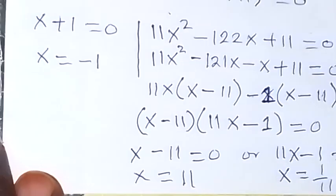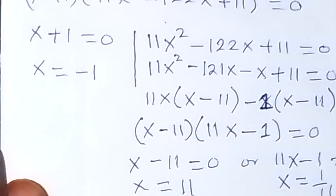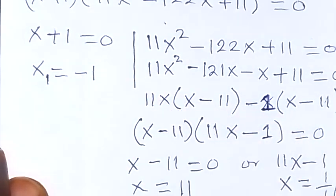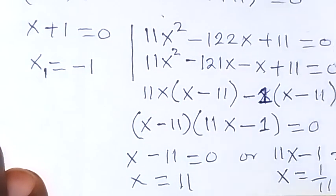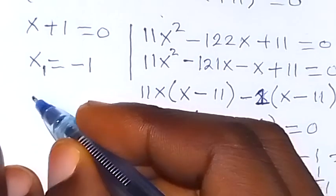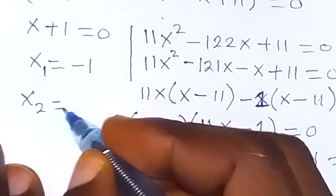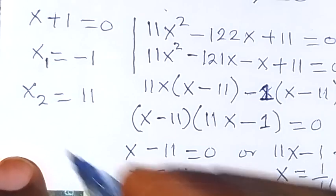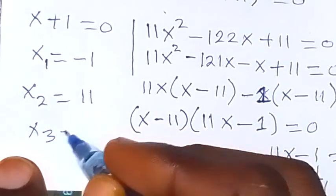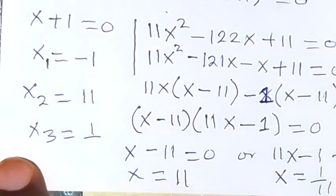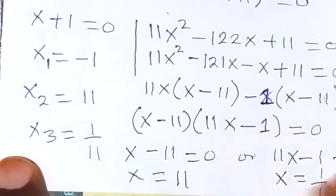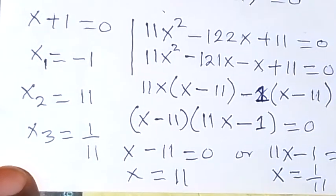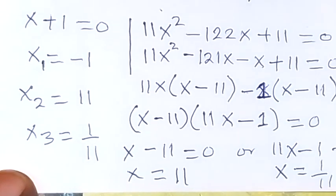We now have three values of x: x₁ = −1, x₂ = 11, and x₃ = 1/11. These are the three values of x from this problem. Thank you for joining us.